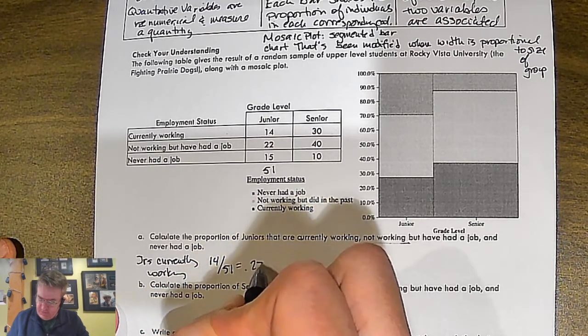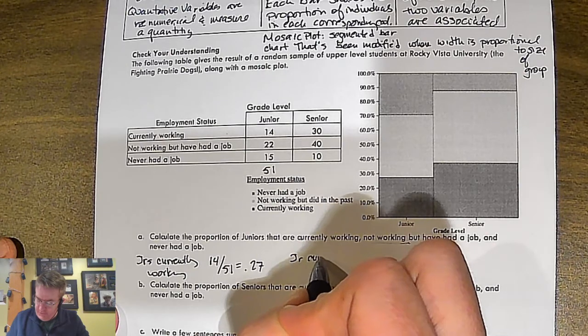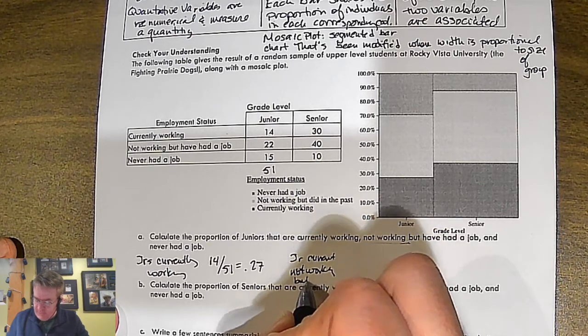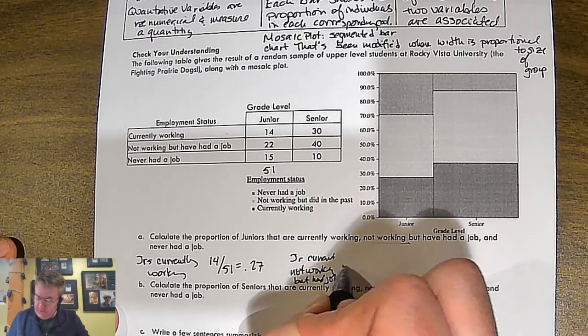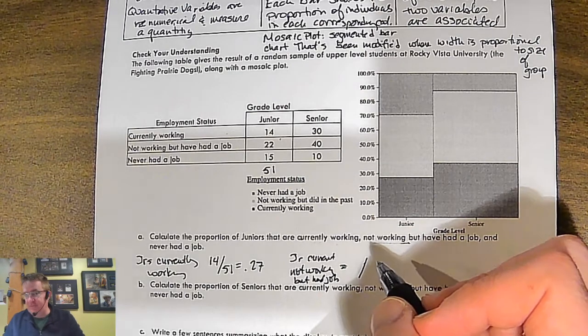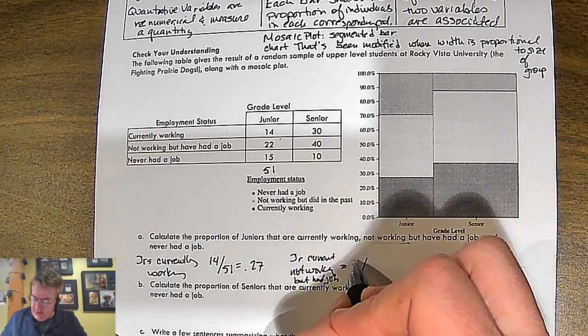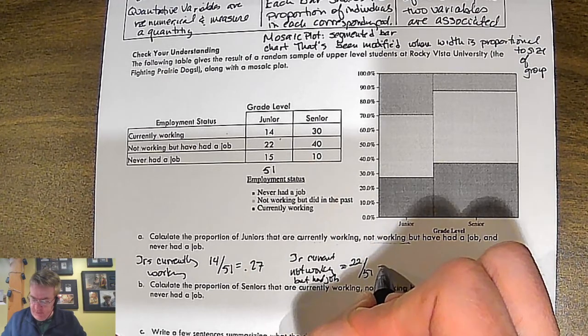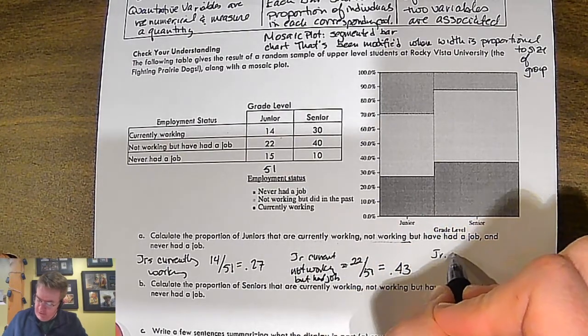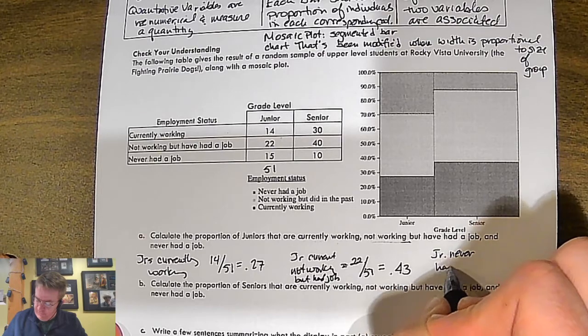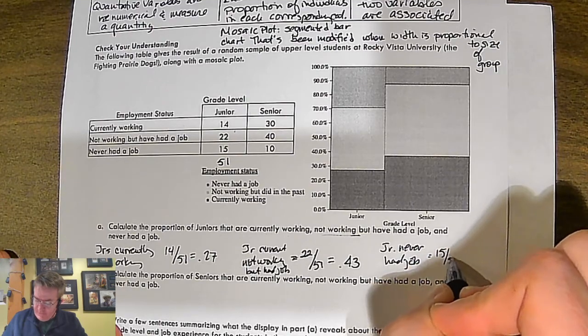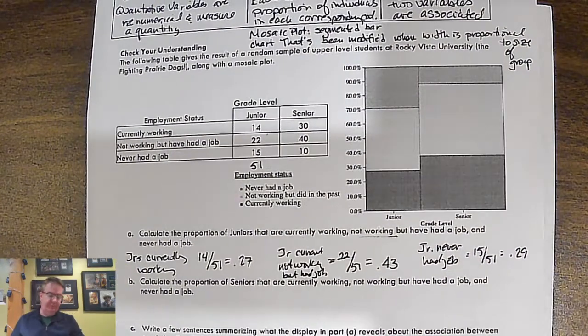And that's about 27%. Juniors who are currently not working but had a job. So, that's 22 out of 51. What type of proportions are those? Check yesterday's notes. 22 out of 51, so that's going to be equal to 43%. And then, junior that never had a job, that's going to be 15 out of 51. So, that's about 29%.